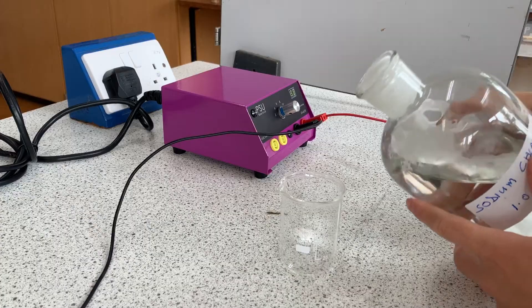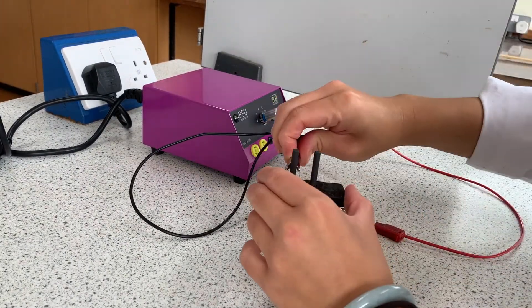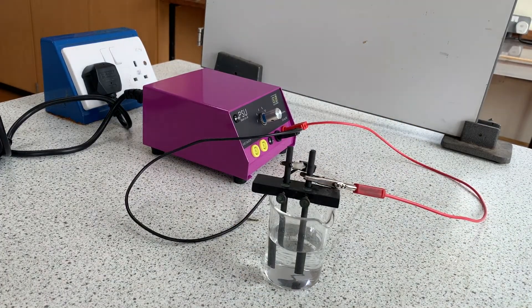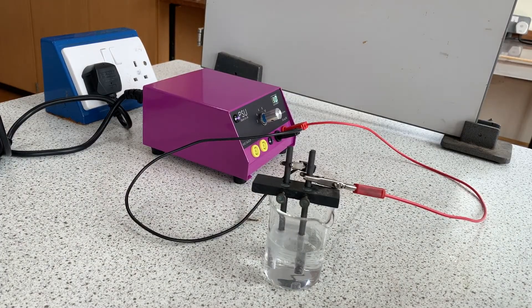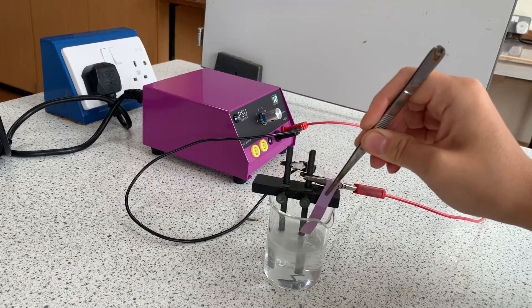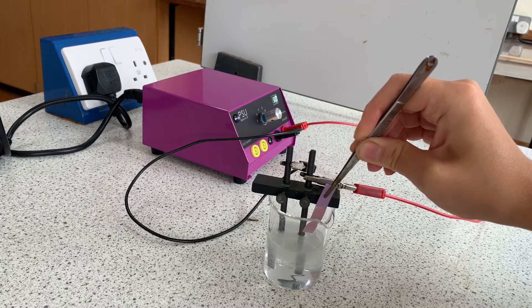This time fill half a beaker with sodium chloride solution. Add the electrodes and connect to a battery. This time we can see fizzing at both electrodes, meaning a gas has been produced at both electrodes. We do not produce sodium as it is more reactive than hydrogen and it stays in solution.